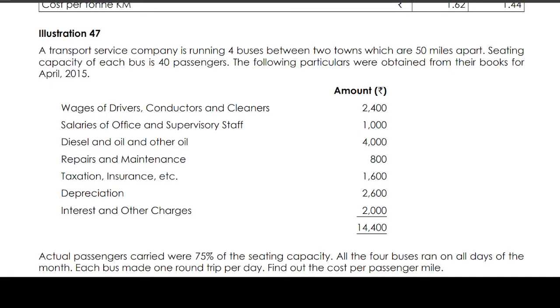Wages of drivers, conductors and cleaners is 2400. Salaries of office and supervising staff is 1000. Diesel and oil and other oil is 4000 rupees. Repairs and maintenance is 800 rupees. Taxation, insurance etc. is 1600 rupees. Depreciation 2600 rupees. Interest and other charges is 2000 rupees. On total of 14400 rupees is your total cost.